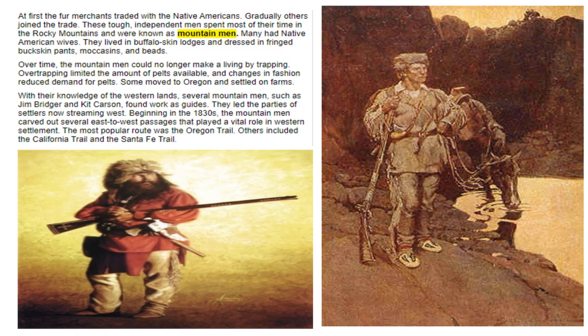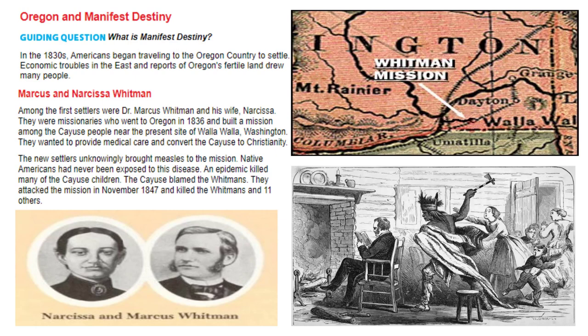Oregon and Manifest Destiny. In the 1830s, Americans began traveling to the Oregon country to settle. Economic troubles in the east and reports of Oregon's fertile land drew many people. Among the first settlers were Dr. Marcus Whitman and his wife Narcissa. They were missionaries who went to Oregon in 1836 and built a mission among the Cayuse people near the present site of Walla Walla, Washington. They wanted to provide medical care and convert the Cayuse to Christianity. The new settlers unknowingly brought measles to the mission. Native Americans had never been exposed to this disease, and an epidemic killed many of the Cayuse children. The Cayuse blamed the Whitmans and attacked the mission in November of 1847, killing the Whitmans and 11 others.